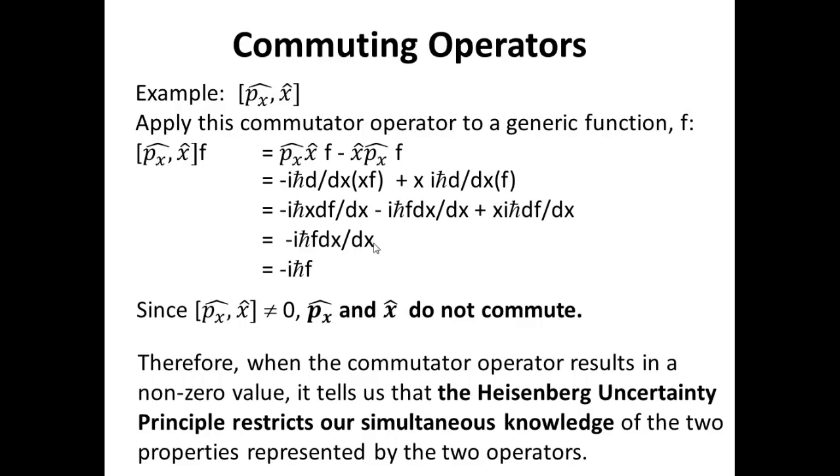And so that's going to be our test in the future is to use this commutator operator really to tell us when the Heisenberg uncertainty principle is going to restrict what we can know about any two properties. As long as we know what those operators are, we can use the commutator test to test them.